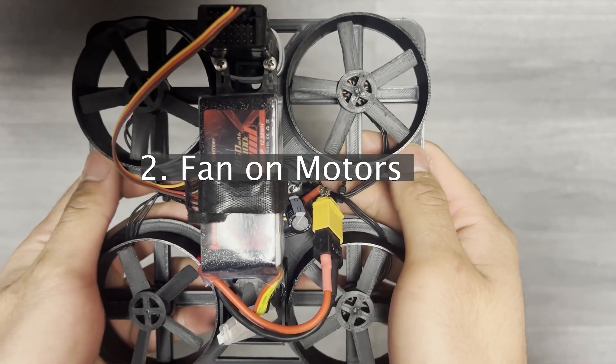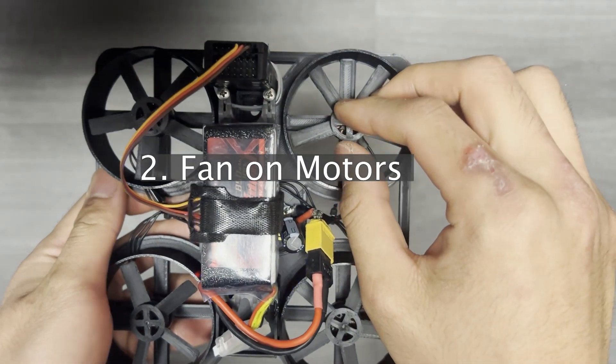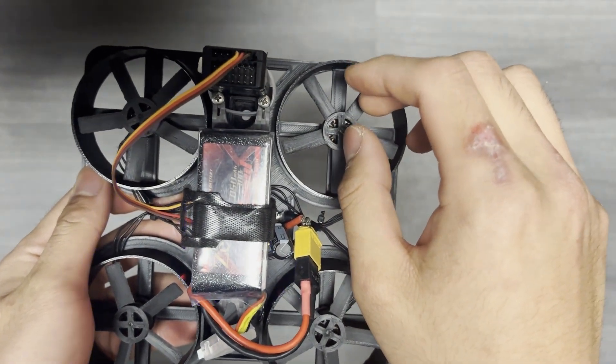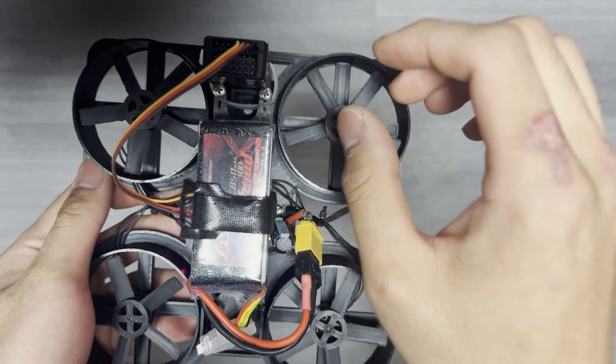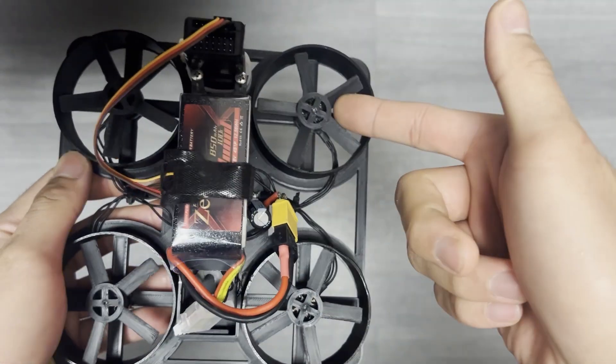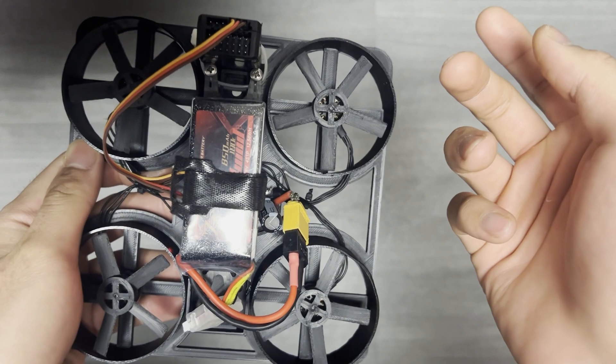So number two is putting the fans on the motor casings. I've seen some designs online that attaches the fan to the EDF right on the motor casing. There's a term for the motor casing. I don't know what it is, but I really like this idea.